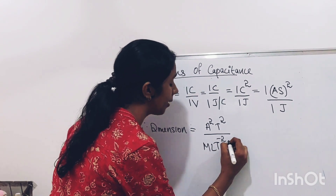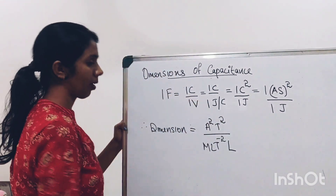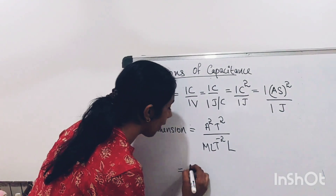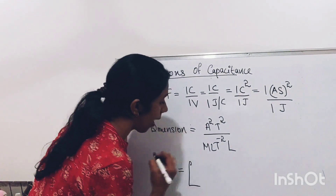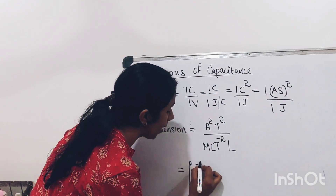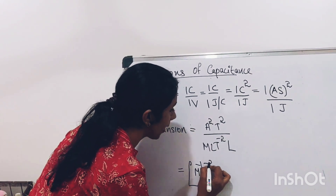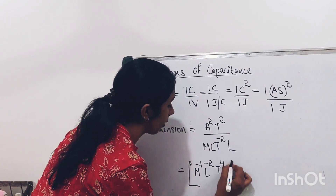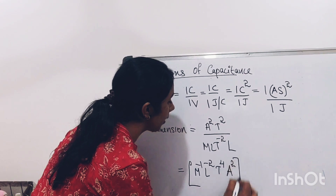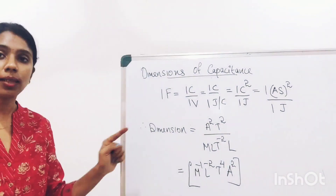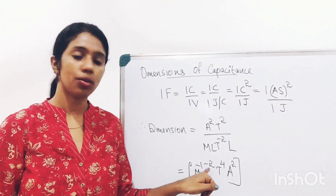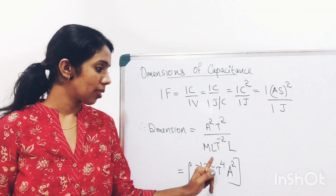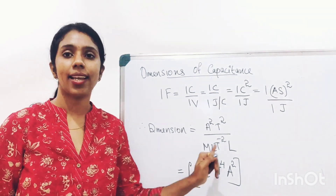The dimension of meter is L. Rearranging this, the dimension of capacitance can be written as M⁻¹ L⁻² T⁴ A². Thus, the dimension of capacitance is M⁻¹ L⁻² T⁴ A².